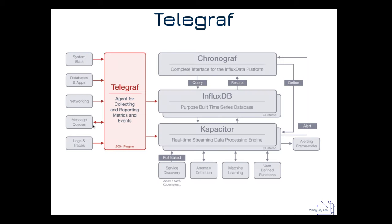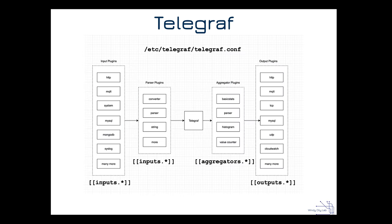Telegraf is the one ingesting all the information. Interestingly, there are over 200 plugins — they've set this up so easily so that you can pull information from all these different sources and push it into InfluxDB. The configuration lives at /etc/telegraf/telegraf.conf — that file specifies all the different input plugins, parser plugins, aggregator plugins that allow you to aggregate information, and output plugins that let you output to various places like TCP, MQTT, or in our case, InfluxDB.